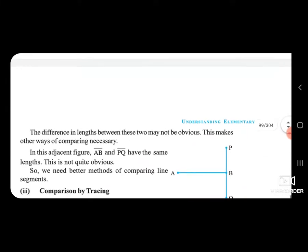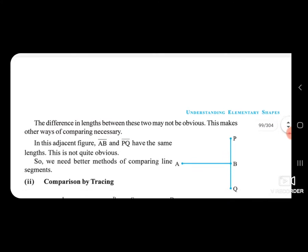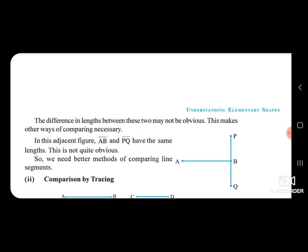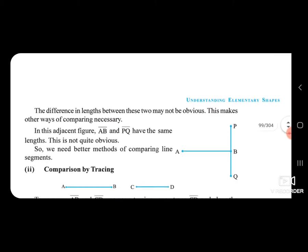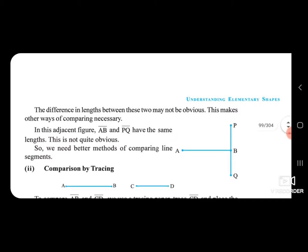This makes other ways of comparing necessary. In this adjoining segment, AB line segment and PQ line segment have the same length — but this is not quite obvious. So we need a better method of comparing line segments, as we cannot always tell which length is longer just by looking.